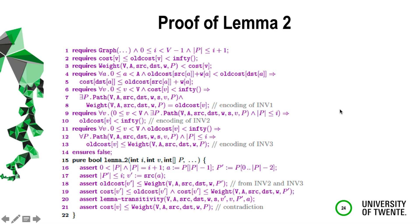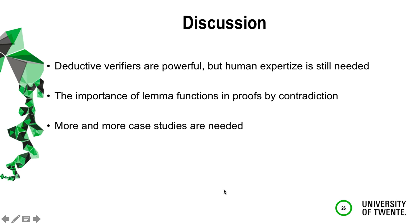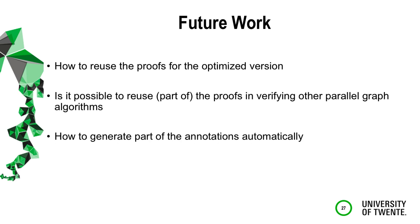Most of the implementation is related to specification. It took six weeks and 12 minutes on this machine to verify the algorithm. Deductive program verifiers are powerful, but expertise is needed to verify non-trivial algorithms, and more case studies are needed to make it easier for non-experts. As future work we aim to reuse proofs for optimized versions or other parallel graph algorithms on GPUs, and to generate parts of the annotations automatically. All specifications are available on the project's GitHub page. Thank you for your attention.